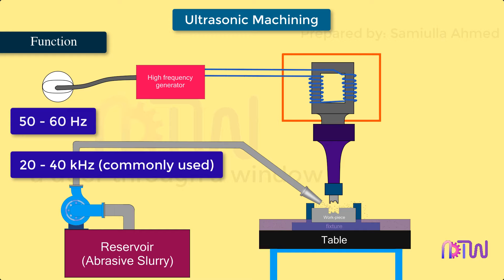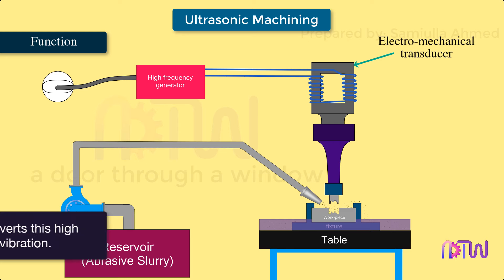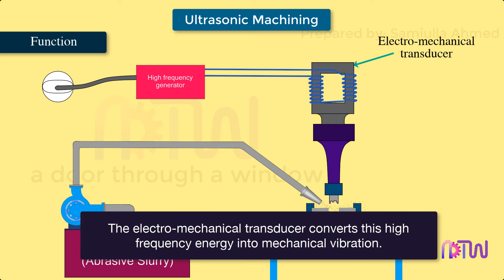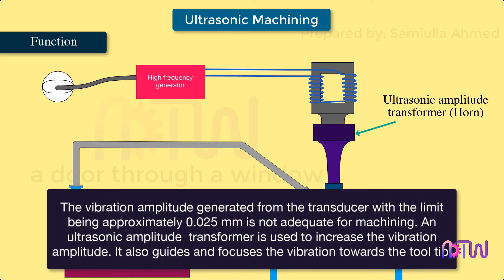Electromechanical transducer: Converts this high frequency energy into mechanical vibration. Ultrasonic amplitude transformer, also called a horn: The vibration amplitude generated from the transducer, with the limit being approximately 0.025 millimeters, is not adequate for machining. An ultrasonic amplitude transformer is used to increase the vibration amplitude.